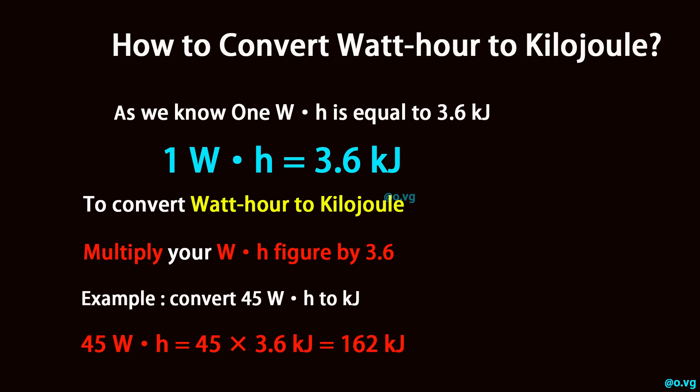Example: convert 45 watt-hour to kilojoule. 45 watt-hour is equal to 45 times 3.6 kilojoule, which equals 162 kilojoule.